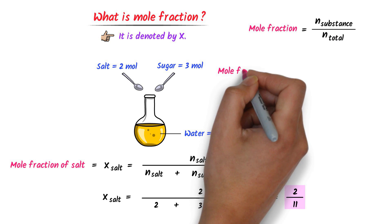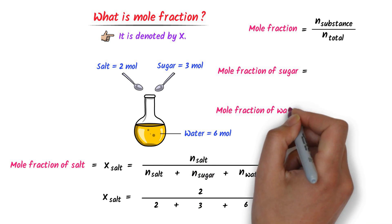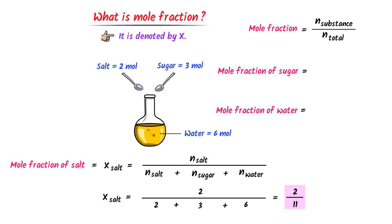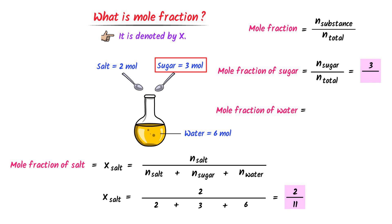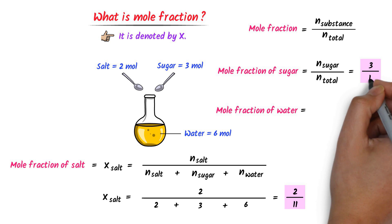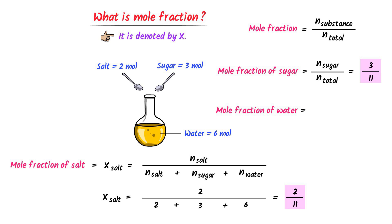Find the mole fraction of sugar and mole fraction of water in this solution. The mole fraction of sugar is equal to number of moles of sugar upon total number of moles of solution. Number of moles of sugar is three upon eleven total moles. Hence the mole fraction of sugar is three by eleven, meaning three moles of sugar are present in eleven moles of solution.